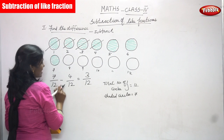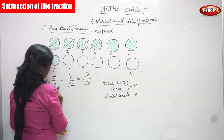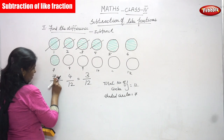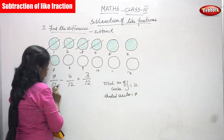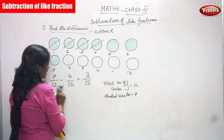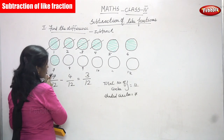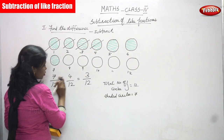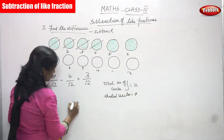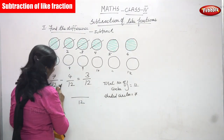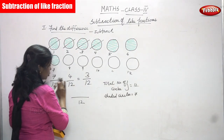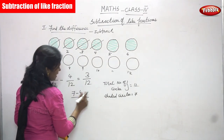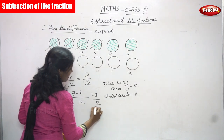So 7 by 12 minus 4 by 12 gives us 3 by 12. First, we look at the denominators: the first fraction is 7 by 12, the second fraction is 4 by 12. The denominators are the same, so we write the denominator one time. Then we look at the numerators — 7 and 4 are different, so we write 7 minus 4, which equals 3. The answer is 3 by 12.